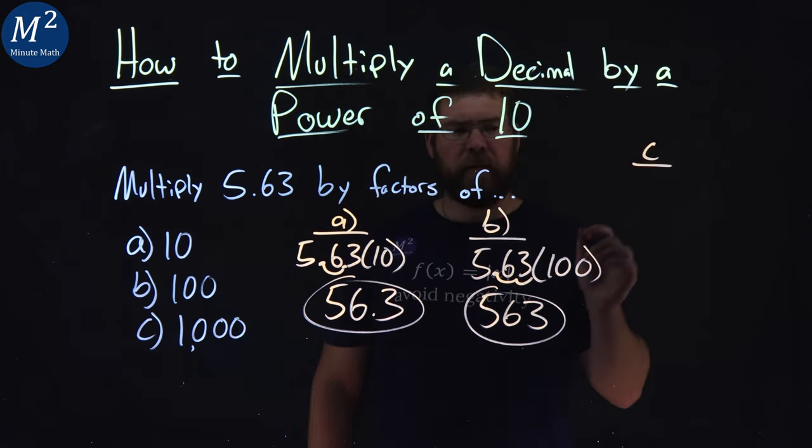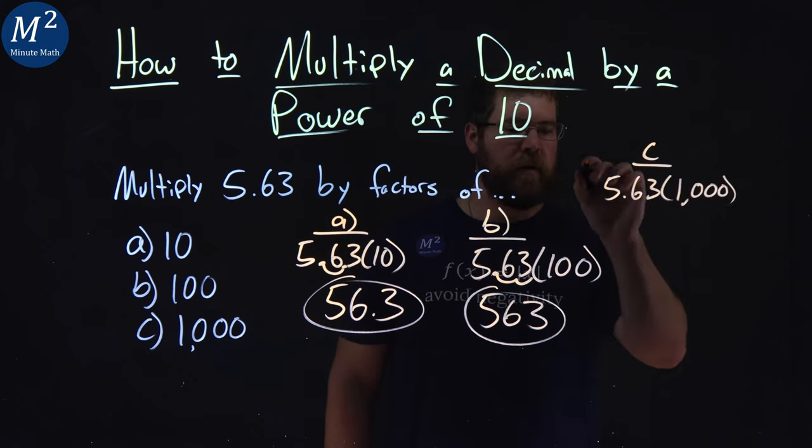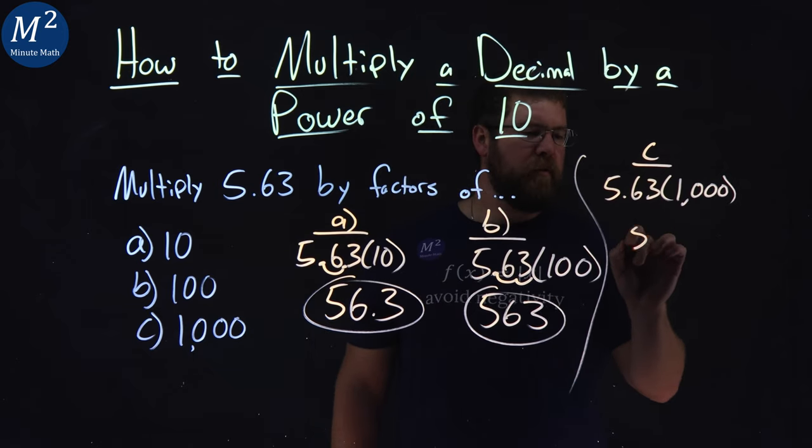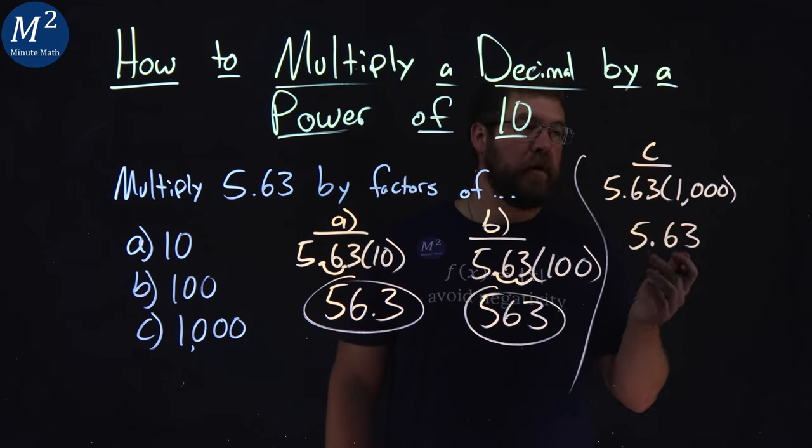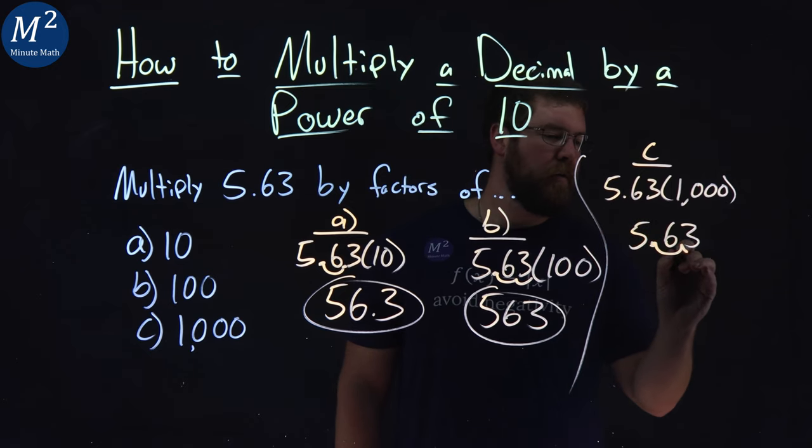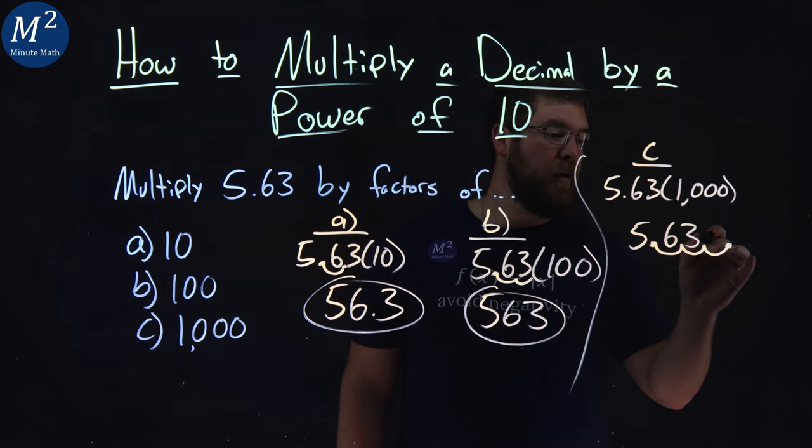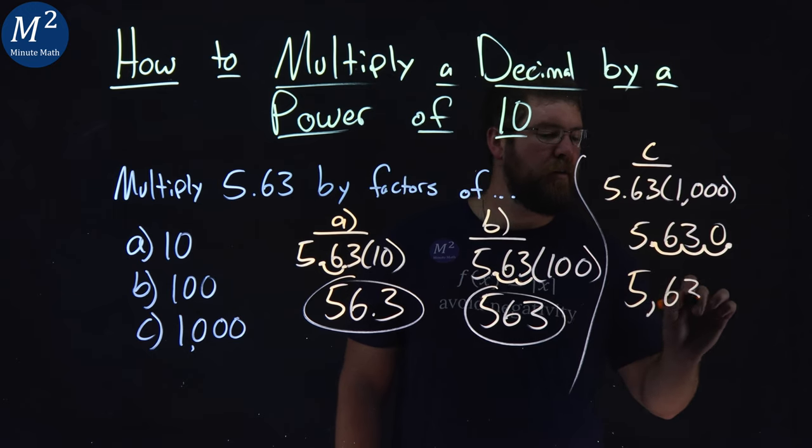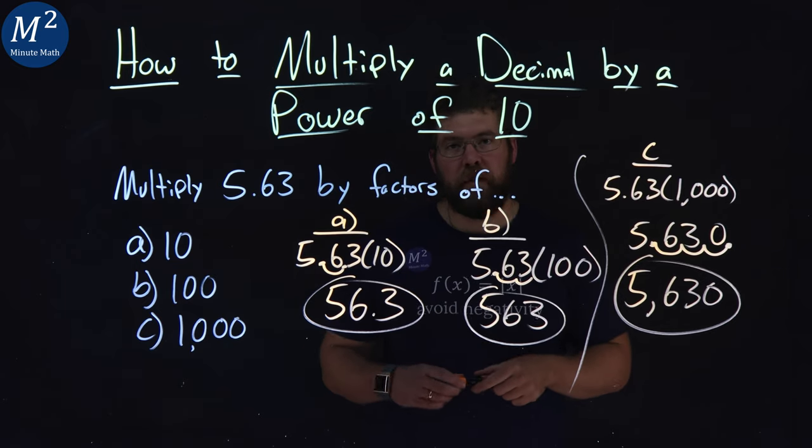And lastly, C: we have 5.63 times 1000. Alright, let's separate this out. Let's rewrite this: 5.63. And since there's a thousand, three zeros, I can move this decimal place over three times to the right: one, two, and an extra one, three. Since there's nothing there, we put a zero to fill in the spot. So we have 5,630 here. It is the result of 5.63 times 1000.